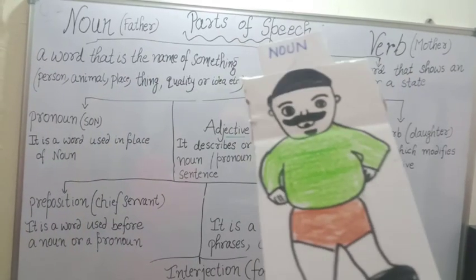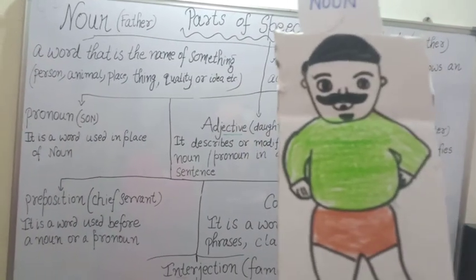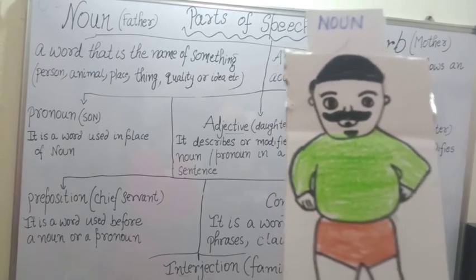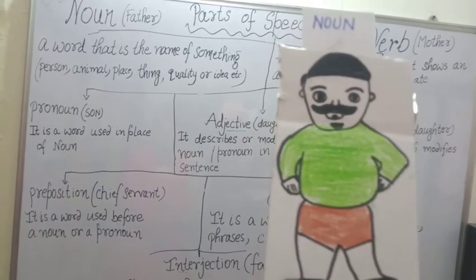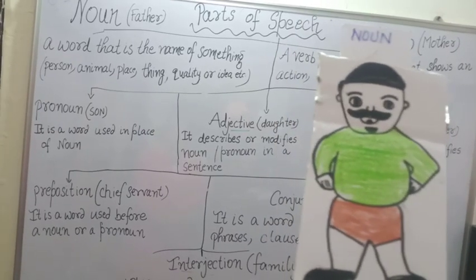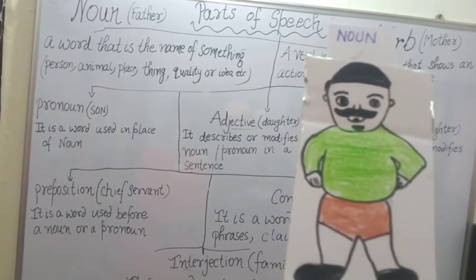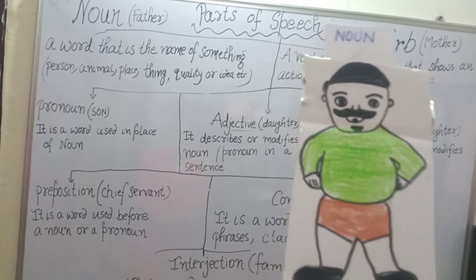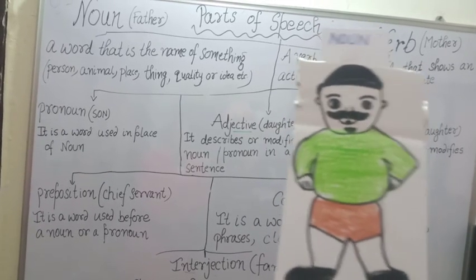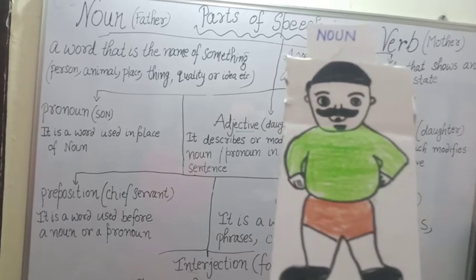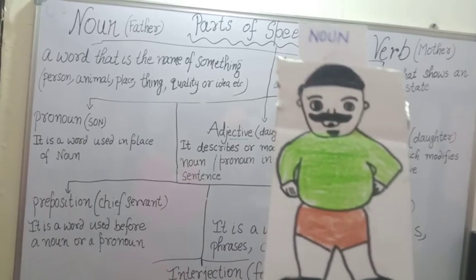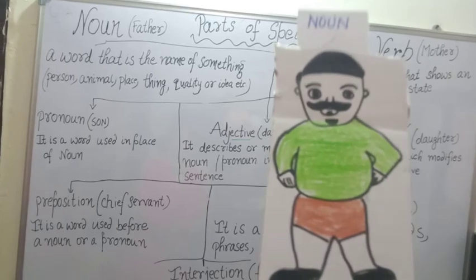First of all, Mr. Noun: I am the head of the family. I am found everywhere. So you can see this is the actual definition of noun. What is noun? A word that is the name of something — person, place, thing, quality or idea. This is what the name given to this head of the family. He is found everywhere, that's why he is given this title.